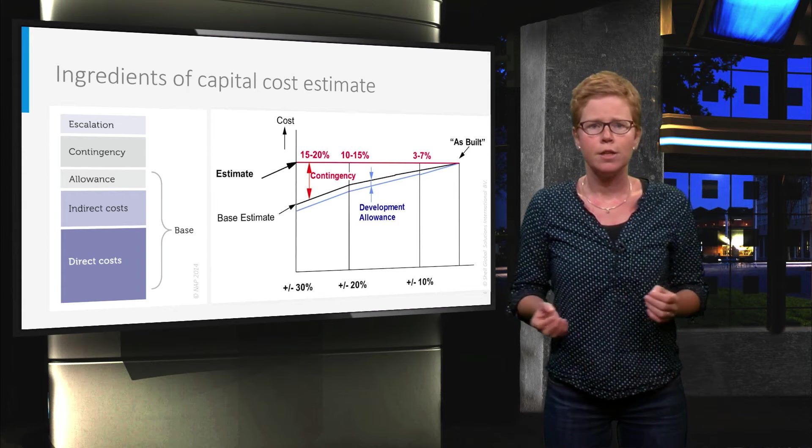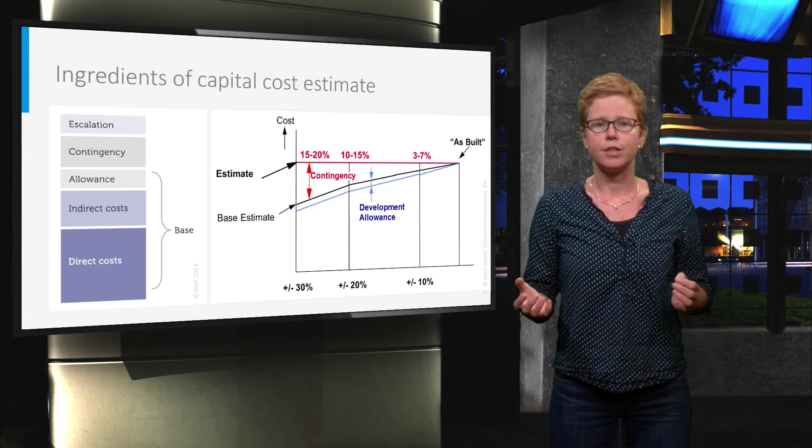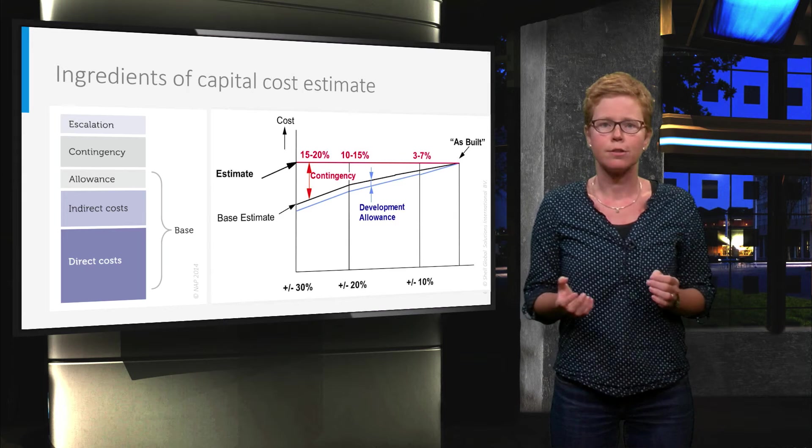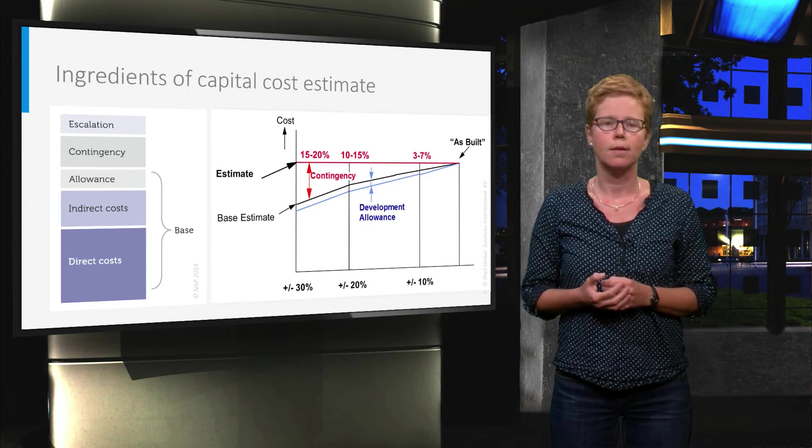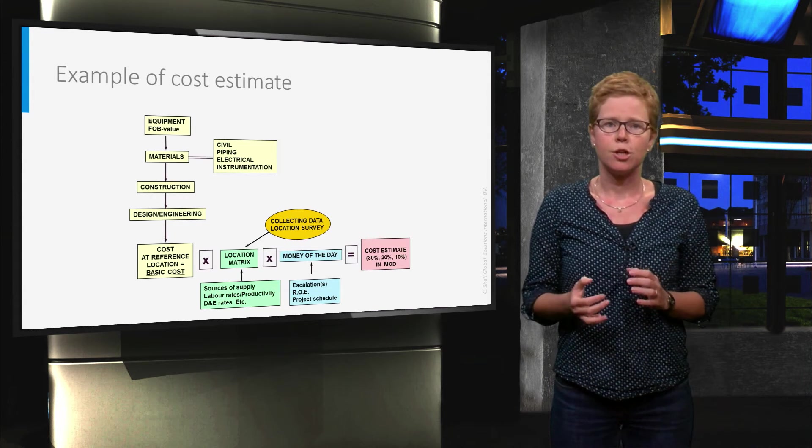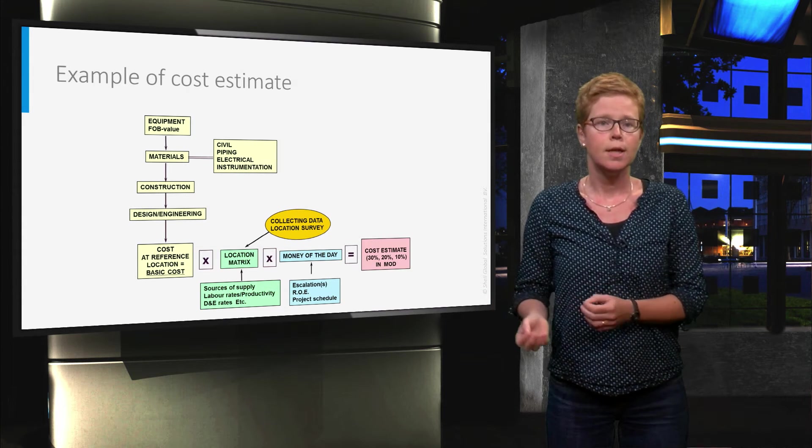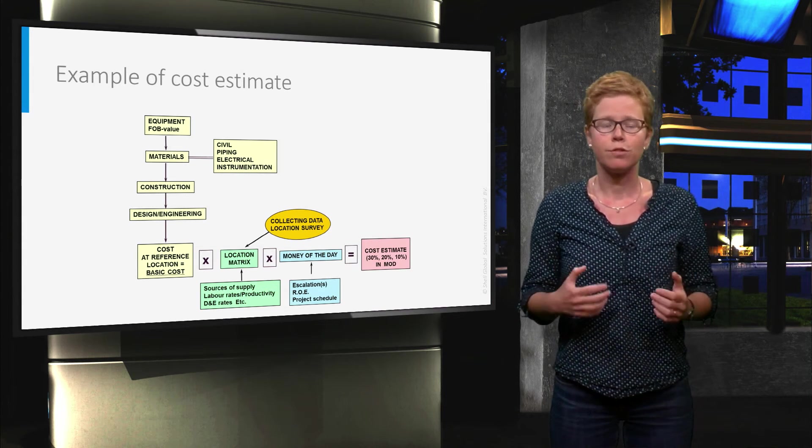The final ingredient of the capital cost is called escalation. This is related to the time value of money and market factors in general. In this example it is shown how the market factor, here referred to as a location factor, and the money of the day will influence the cost estimate.